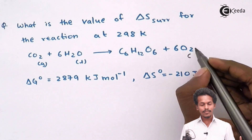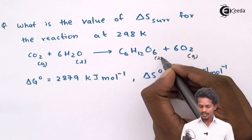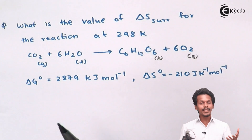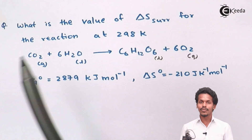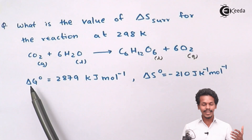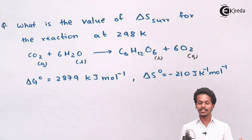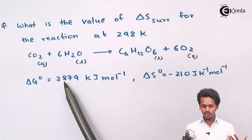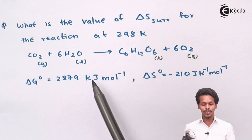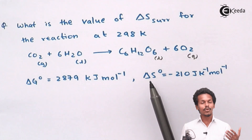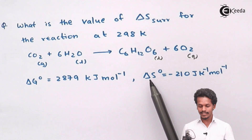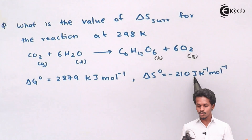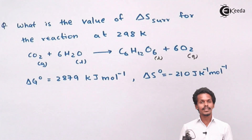In this case, we have to calculate delta S of the surrounding. The delta G⁰ is provided as 2879 kilojoules per mole, and the standard entropy change delta S⁰ is given as minus 210 Joules per Kelvin per mole.